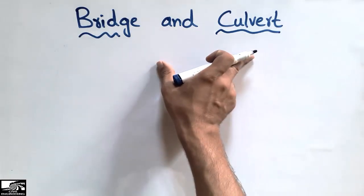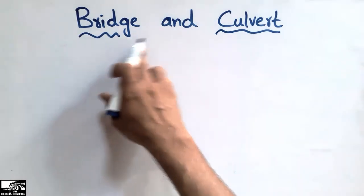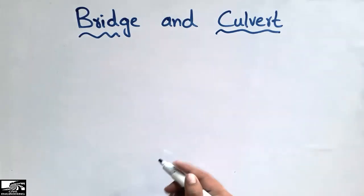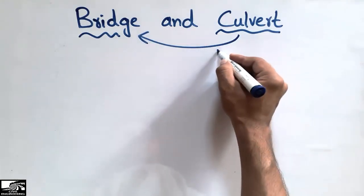I will also show you the pictures of these two types of structures at the end of the video. So the culvert is the subtype of the bridge. It should be known to us that the culvert is the subtype of the bridge.